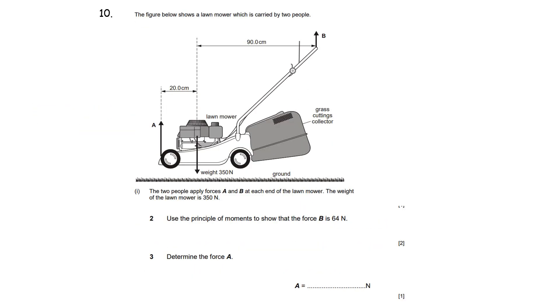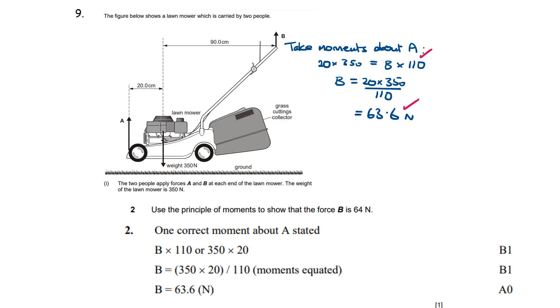Part two: use the principle of moments to show that the force B is 64 newtons. So to find force B we need to take moments about A, and we're taking A as our pivot point here so all our dimensions will need to go to that point. So the clockwise moment is the weight 350 multiplied by 20, distance to the pivot.